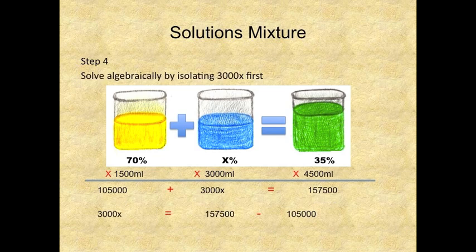Step 4. Solve algebraically by isolating 3,000x first. So you have that in order to isolate the 3,000x you need to leave it on one side of the equation or on one side of the equal sign and you have 157,500. You need to subtract 105,000 from both sides which will leave you with the following equation. 3,000x is equal to 157,500 minus 105,000.